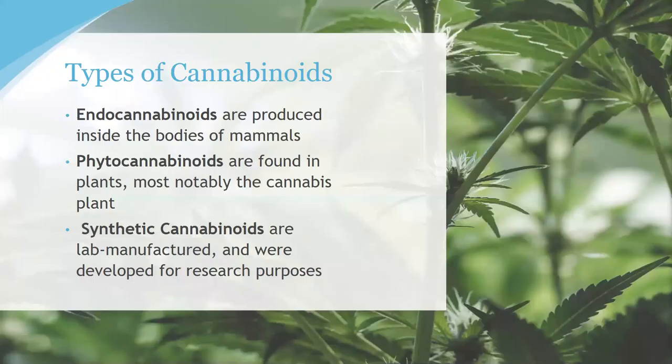So what is a cannabinoid? A cannabinoid is essentially a class of diverse chemical compounds. The function of a cannabinoid is to travel through the body and bind to the correct receptor, which then triggers a response in that cell and thus the cell's organ system. This response can be measured as therapeutic relief — like pain reduction, cessation of seizure activity, or sedation, for example. So where do cannabinoids come from?